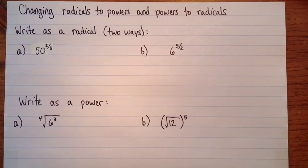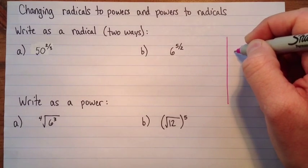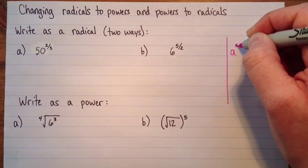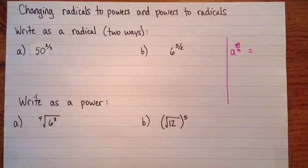Okay, just before we start, I'm just going to write down the rule that tells us what fractional exponents mean. I'll just put it over here. So it's a to the m over n equals, and we have two different ways of writing this.